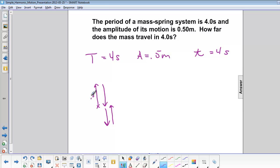Each part of this is 0.5 meters. So we've got 0.5 up, 0.5 down, another 0.5 down, and another 0.5 up. Altogether, this is 2 meters.